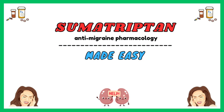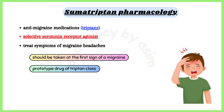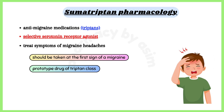Sumatriptan belongs to the class of anti-migraine medications known as triptans. It is a selective serotonin receptor agonist used to treat symptoms of migraine headaches. Triptans should be taken at the first sign of a migraine for best efficacy. Sumatriptan is the prototype drug of the triptan class.